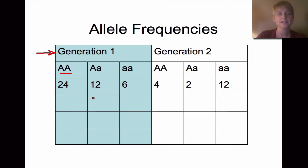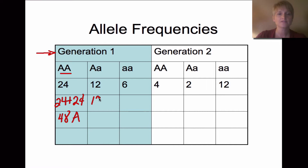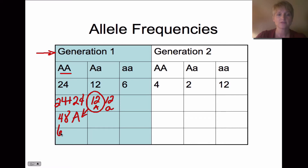For homozygous dominant (AA), we have 24 individuals with that genotype, meaning 24 of each A, giving us 48 capital A alleles. For the heterozygous individuals (Aa), we have 12 capital A and 12 lowercase a. Adding that 12 to the 48 gives us 60 capital A alleles total.